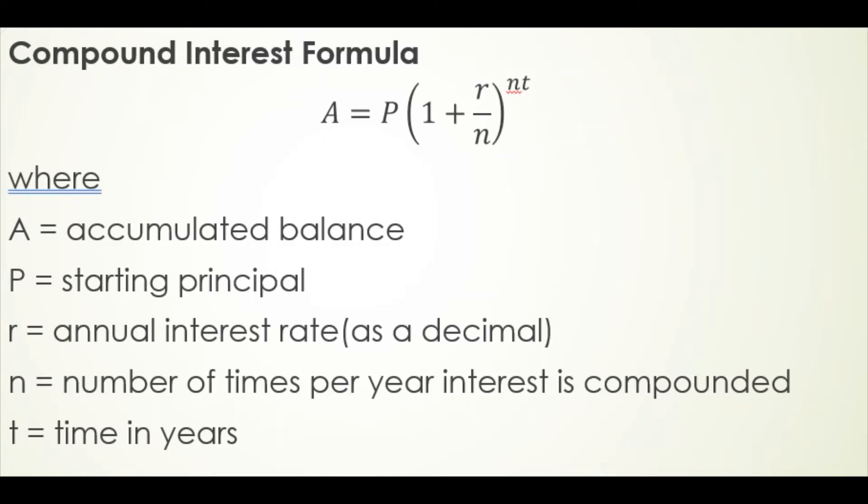R is the annual interest rate as a decimal. That is, that's going to be important. We're often given interest rates as a percentage. We need to turn that percentage into a decimal before plugging it into this formula.